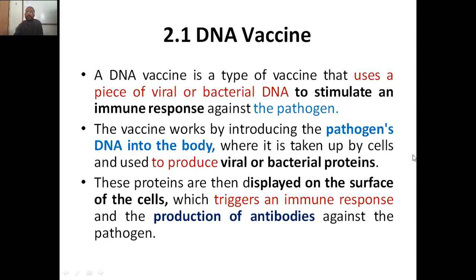The vaccine works by introducing the pathogen's DNA into the body, where it is taken up by cells and used to produce viral or bacterial proteins. These proteins are then displayed on the surface of the cells, which triggers the immune response and the production of antibodies. These antibodies go and find the antigens of that particular pathogen and nullify or kill them.